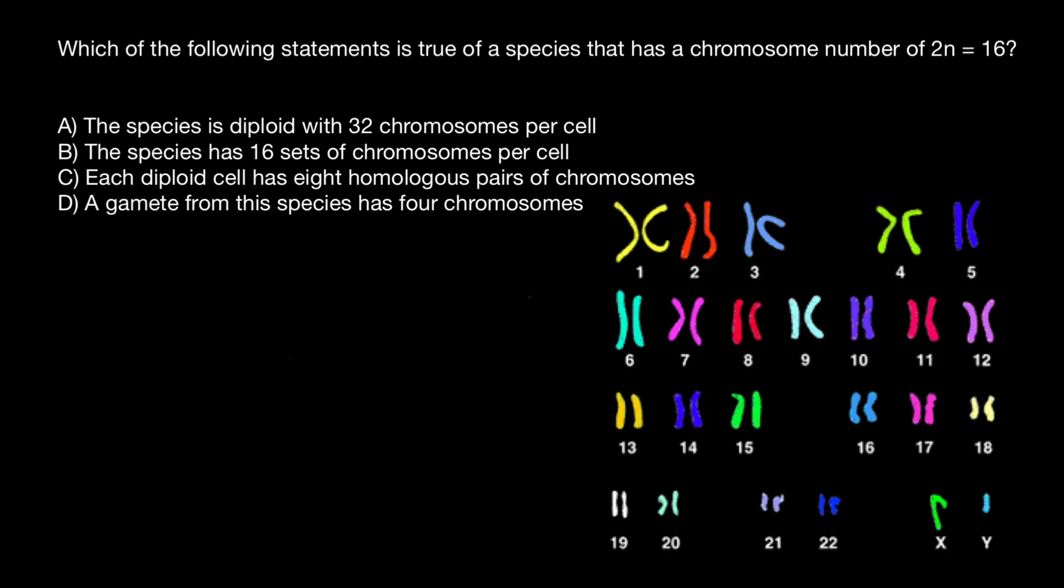So in a human diploid cell, we say 2N, we can find 46 chromosomes. We also can say 23 pairs of chromosomes or sets of chromosomes. So 46 chromosomes equals 23 pairs of chromosomes.